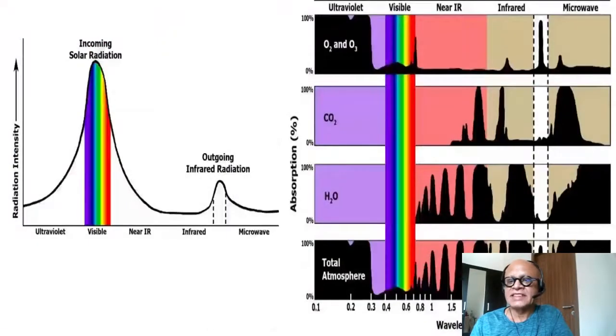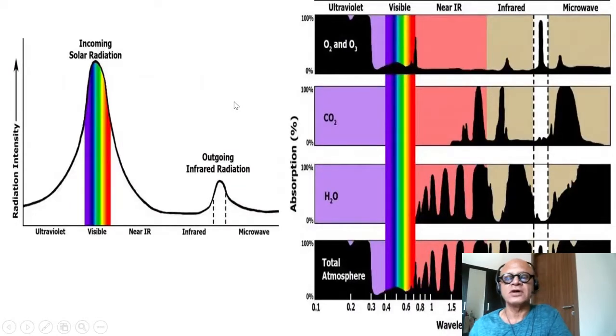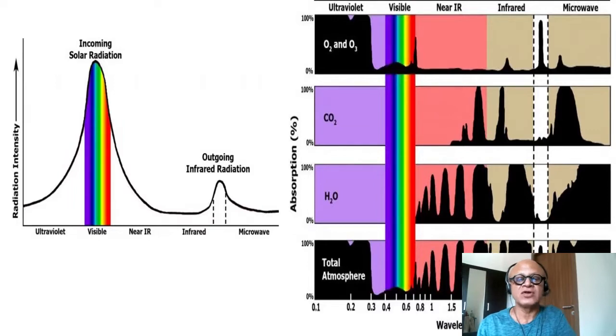Obviously we are worried about methane because it's a greenhouse gas, so let's look at some of the properties in terms of its impact on radiation.